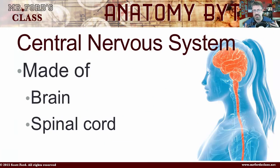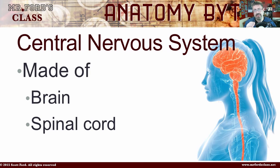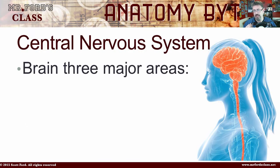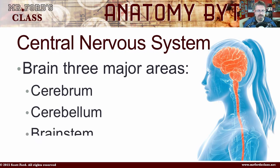Before we begin talking about the frontal lobe, let's get a little background to put this in context. We have something called the central nervous system. All of these topics I go into more detail in the anatomy and physiology lectures, but here we're just focusing on this one specific area. The central nervous system is made of the brain and spinal cord only — that's it. And the brain has three major areas: we have the cerebrum, the cerebellum, and the brain stem.